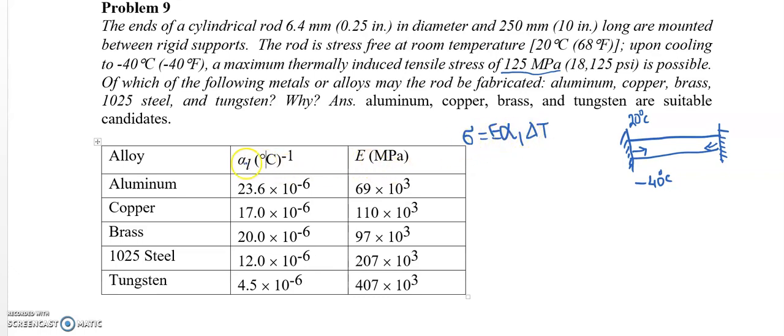So in this case, E and alpha L values are known, and of course delta T is from 20 to minus 40 degrees centigrade. So 20 minus minus 40, that means 60 degrees centigrade.